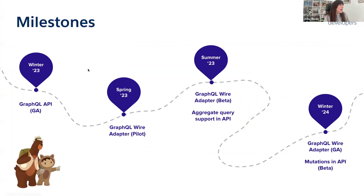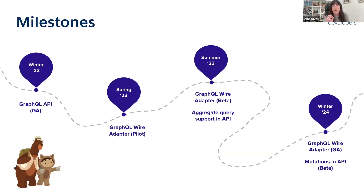The GraphQL API was made available in Winter '23, and the GraphQL wire adapter was released in Winter '24. The GraphQL API currently allows you to perform queries and also mutations. Mutations are operations that modify the database, such as create, update, or delete. However, mutations are still in beta on the API side, and the GraphQL wire adapter only supports queries — not mutations for now. That will come in the future.